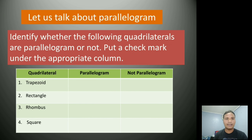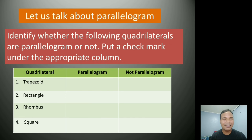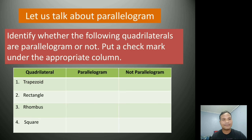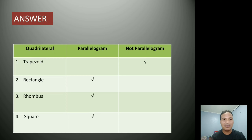In this video, let us talk about parallelogram. Identify whether the following quadrilaterals are parallelograms or not: trapezoid, rectangle, rhombus, and square. The answer is: trapezoid is not a parallelogram. Rectangle, rhombus, and square are parallelograms.